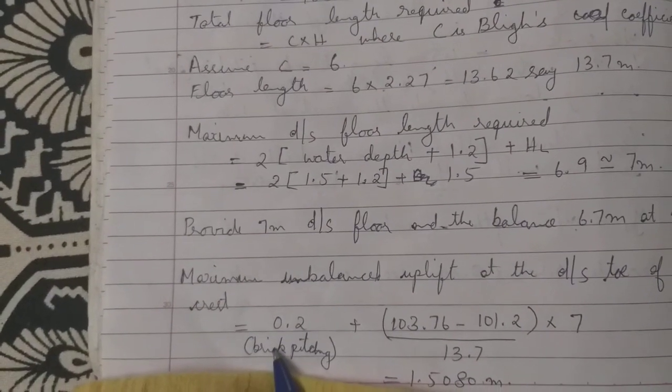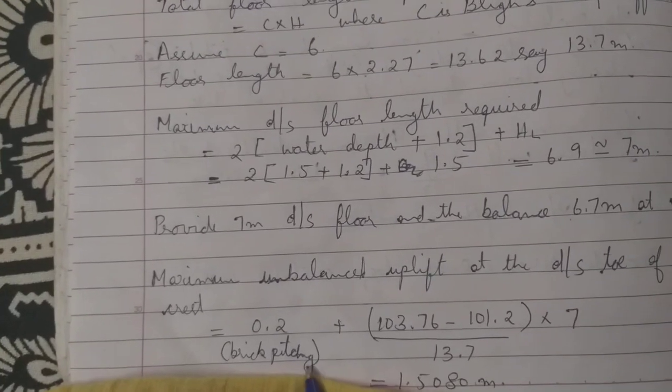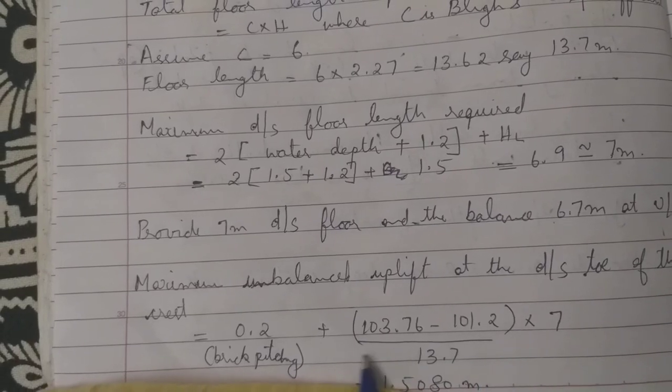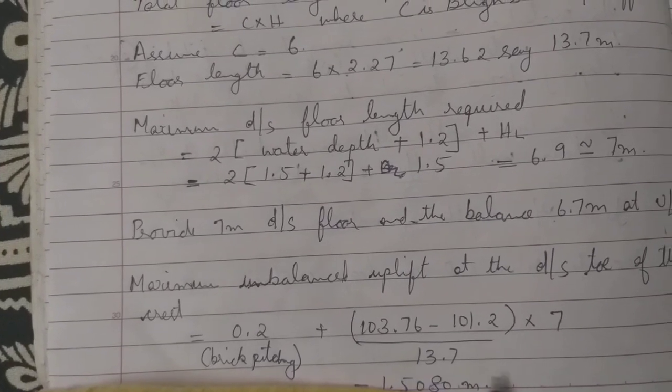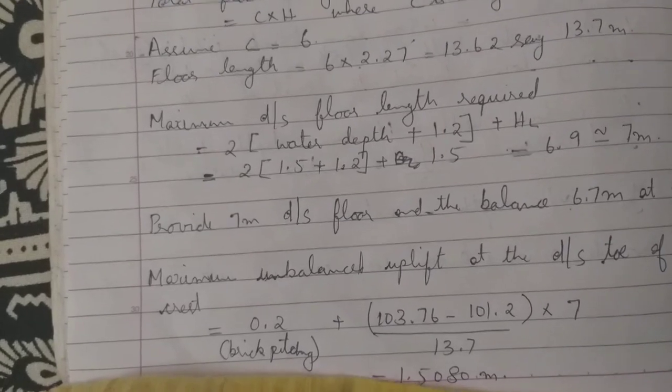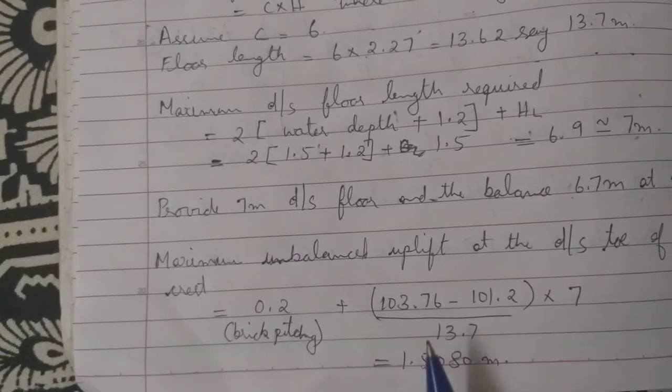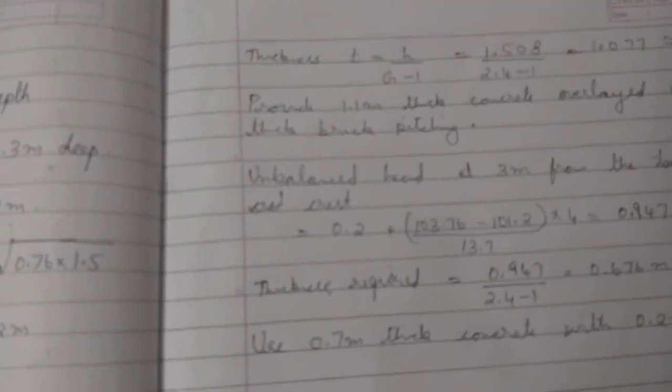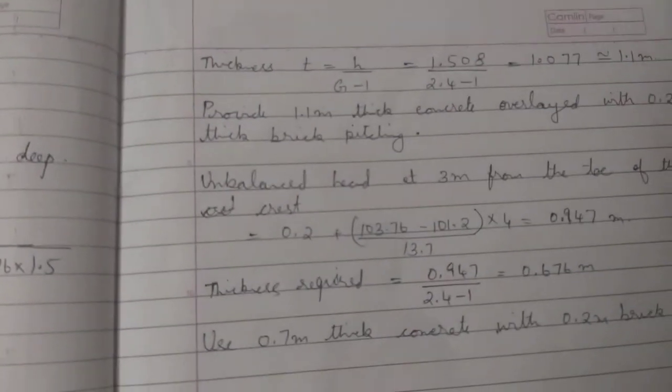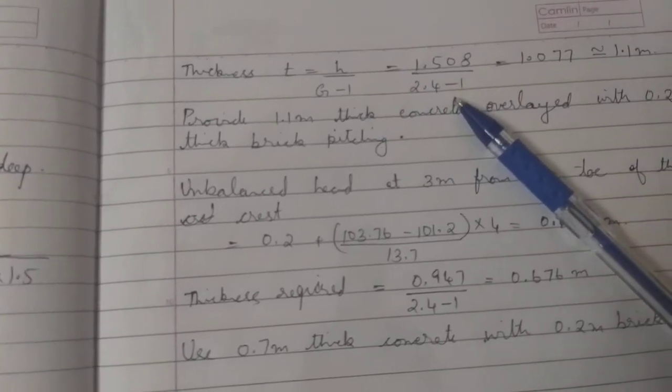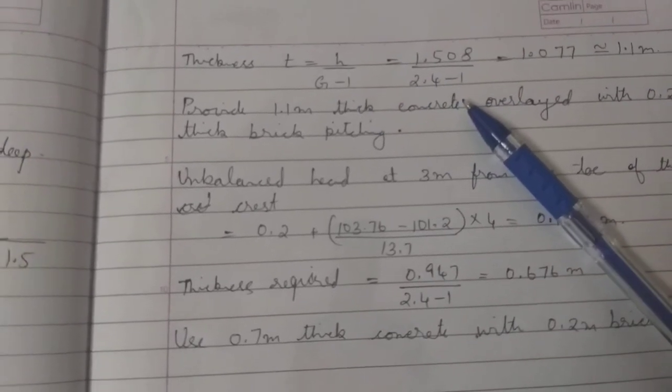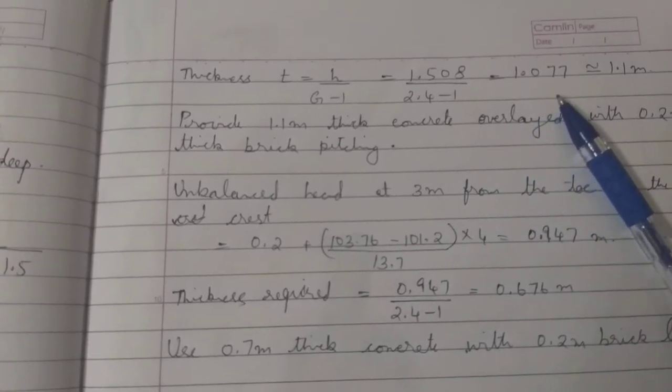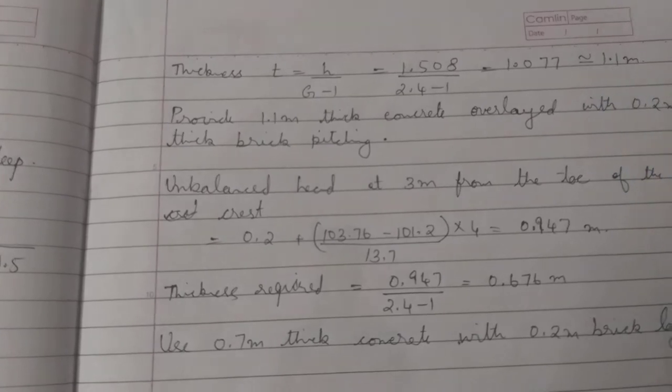Maximum unbalanced uplift at the downstream toe of the crest is equal to 0.2, that is the brick pitching, plus (103.76 minus 101.2) divided by 13.7 into 7, which equals 1.508 meters. Thickness t is equal to h divided by (g minus 1), equal to 1.508 divided by (2.4 minus 1), which equals 1.1 meters.